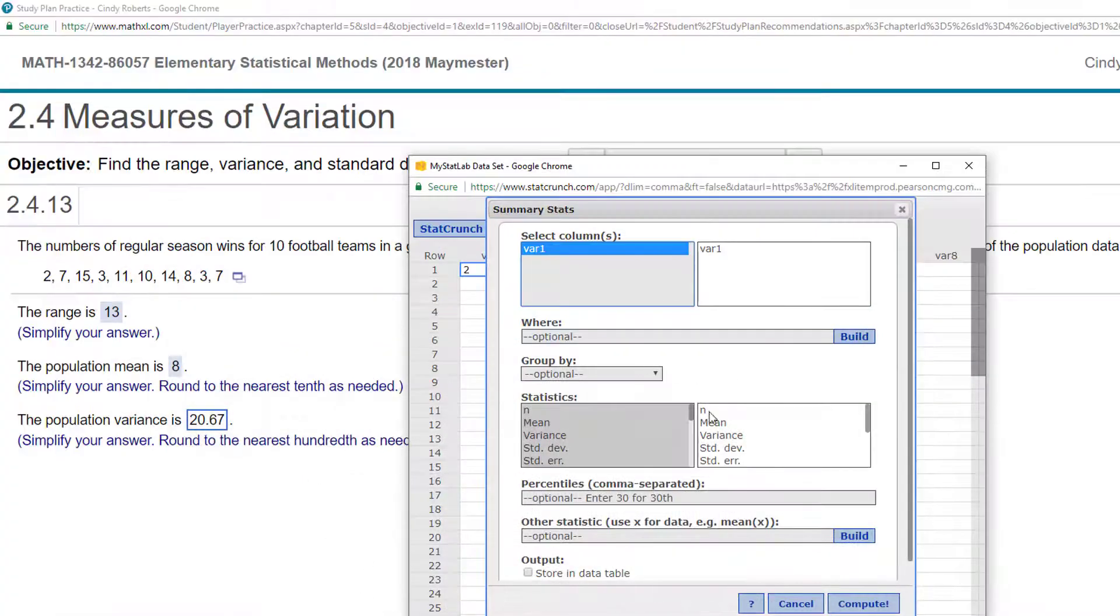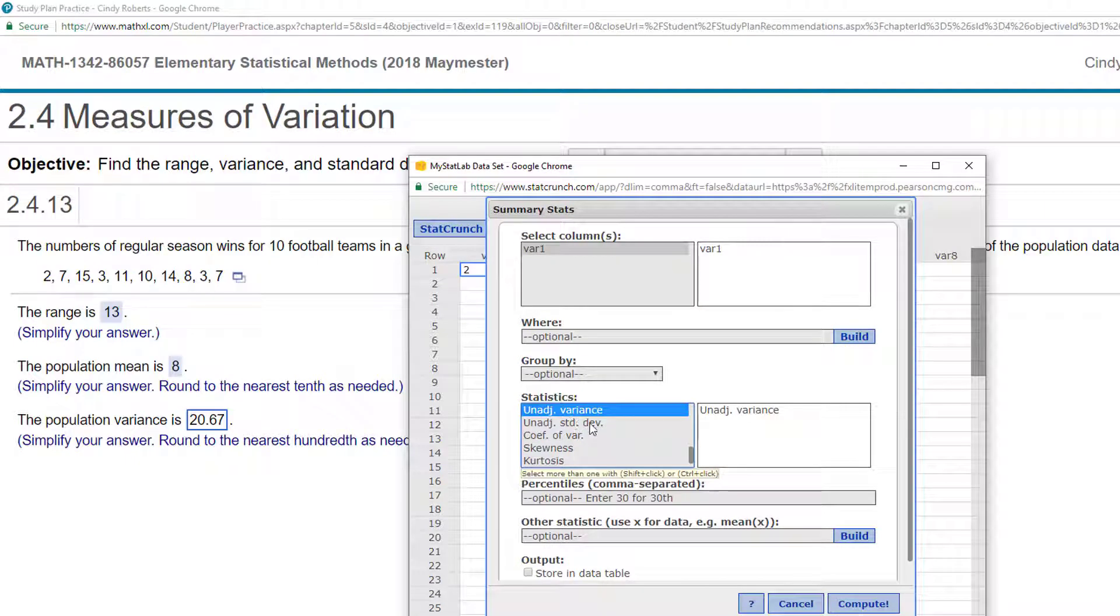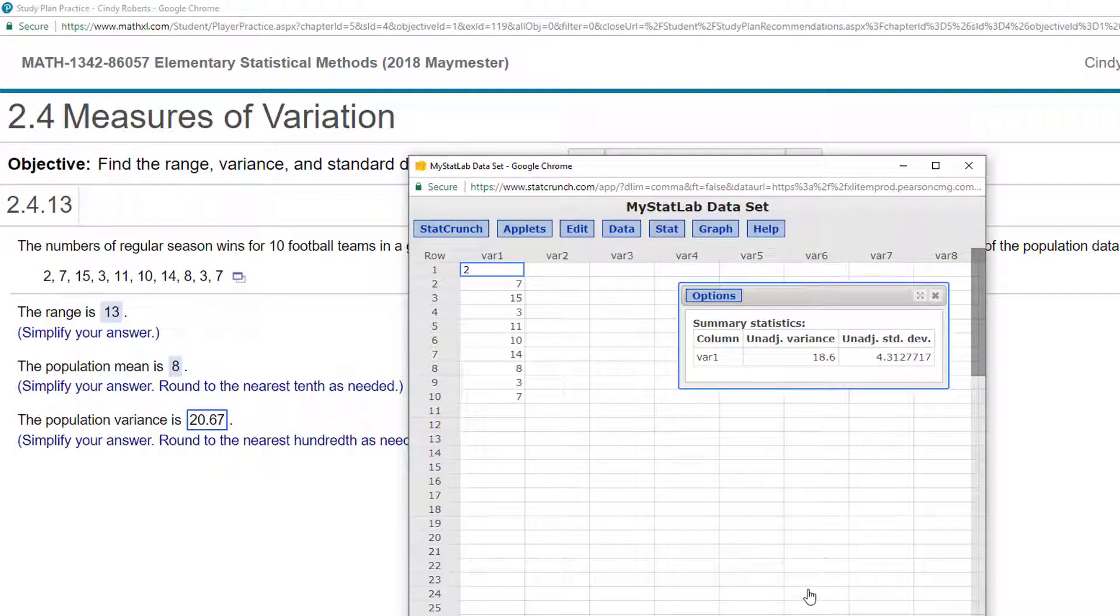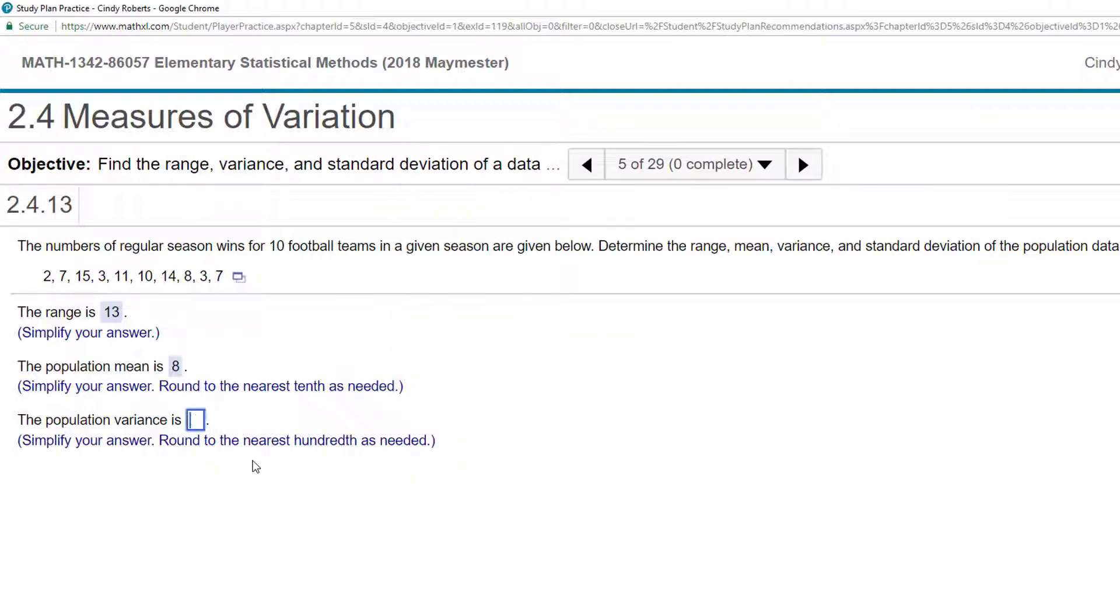So what I want to do is I want to force it, and if you scroll down here, there's an unadjusted variance and an unadjusted standard deviation, and that gives me the population. So now I can see it's 18.6. I guess I need to put the zero there. Nice work.